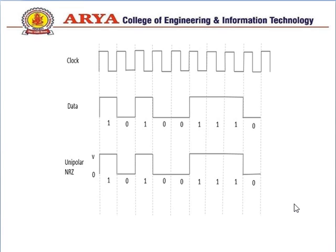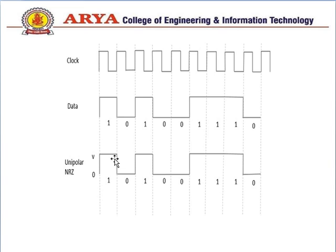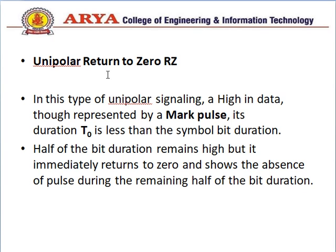Looking at the diagram: this is the clock and this is the data to be transmitted. For the high pulse we have 1; for no pulse we have 0. In unipolar NRZ, we do not return to 0 for a 1 — we continue for the 1, then for 0 there is no pulse. For 0 we remain at the zero axis, and for 1 we move to the positive side.